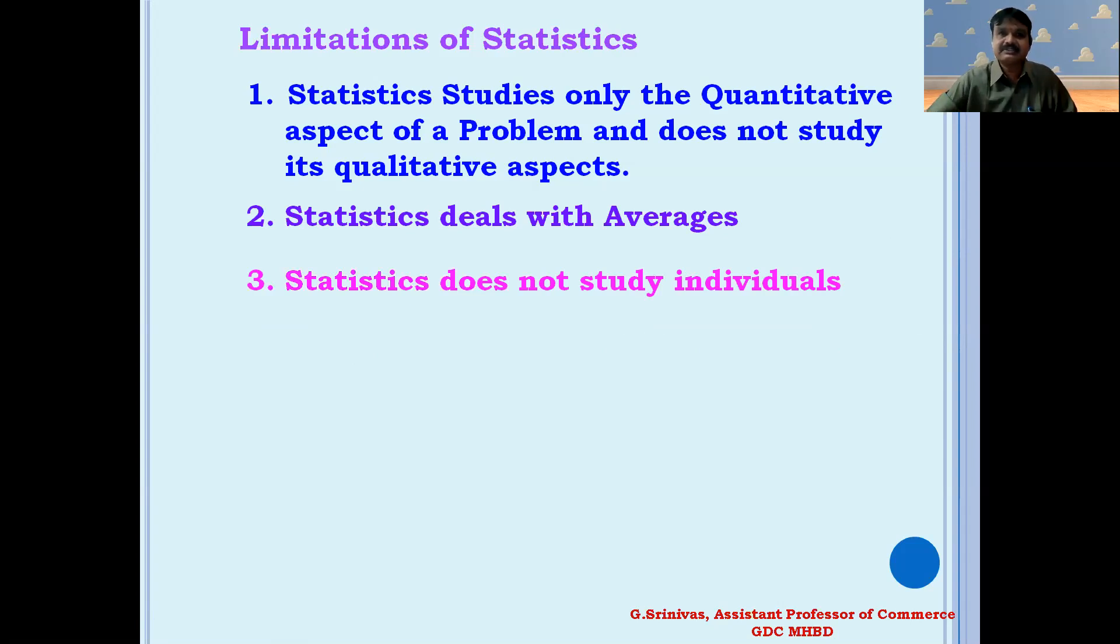Statistics deals with averages. Statistics largely deals with averages, and these averages may be made up of individual items radically different from each other. Laws of statistics are true on average. These laws are not universally applicable as the laws of physics or chemistry. For example, according to the law of gravitation, everything that drops from above falls on the ground. Laws of statistics are not so universal; they are true on average. The reason is that statistics deals with phenomena which are affected by a multiplicity of causes, and it is not possible to segregate the effects of one factor as can be done in physical sciences.